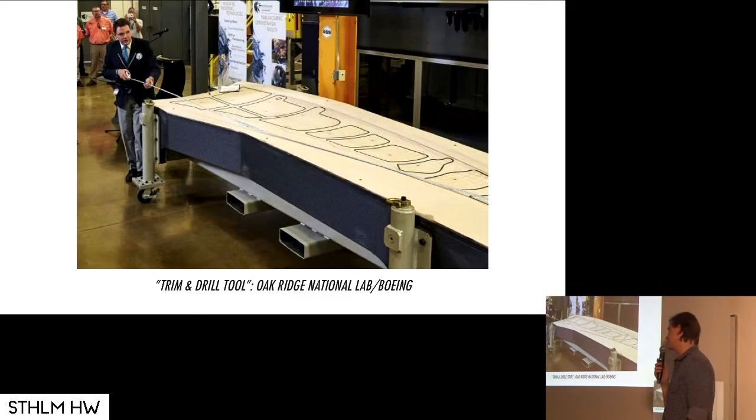Jigs and fixtures. This just happened to be the biggest 3D printed object. It's a jig and fixture for a Boeing 777X wing. They use this in order to place the wing to get all the drill holes in the right place, and so on. And this weighs about 750 kilos. It was printed in 30 hours.